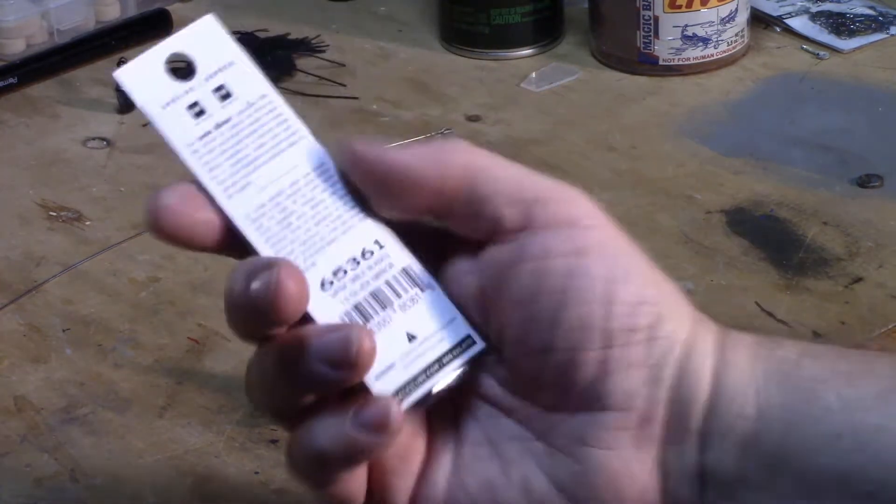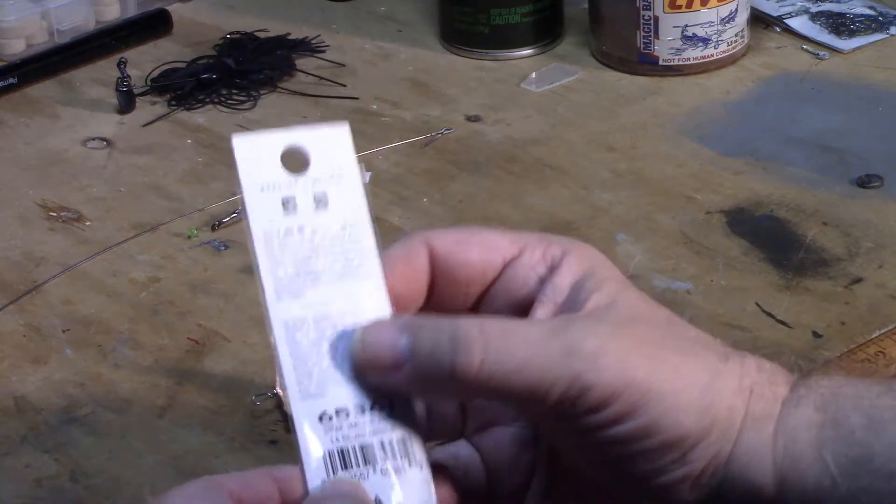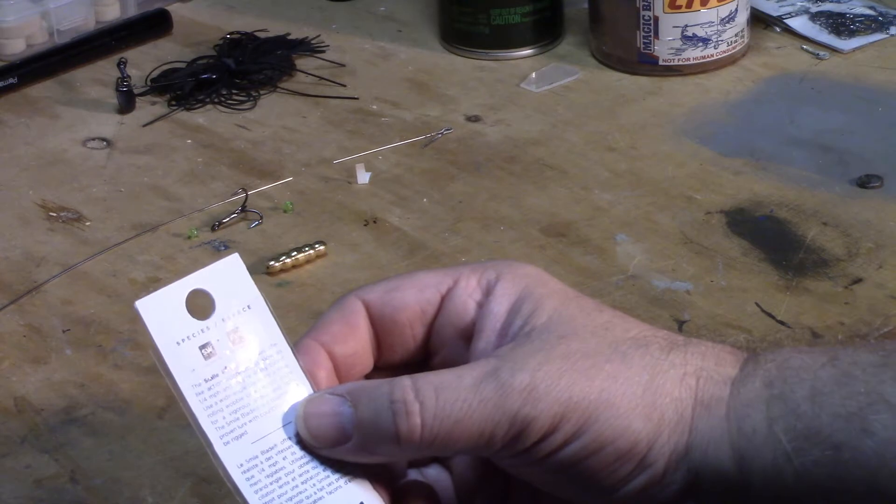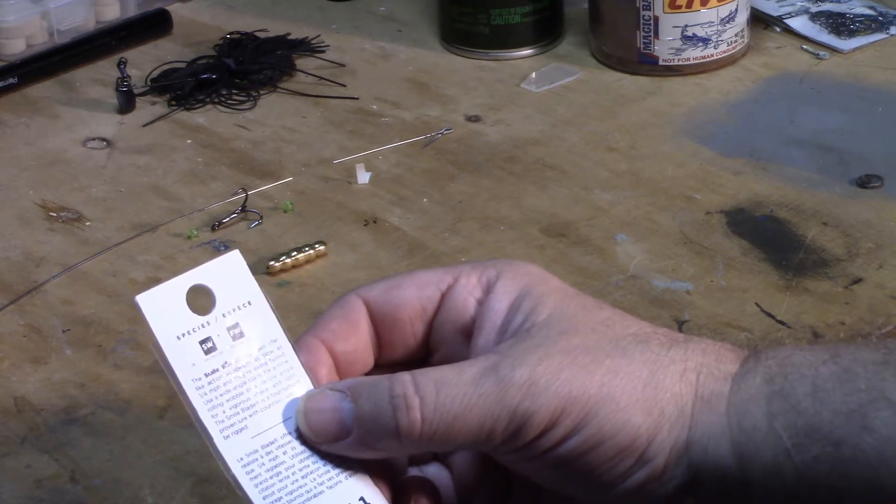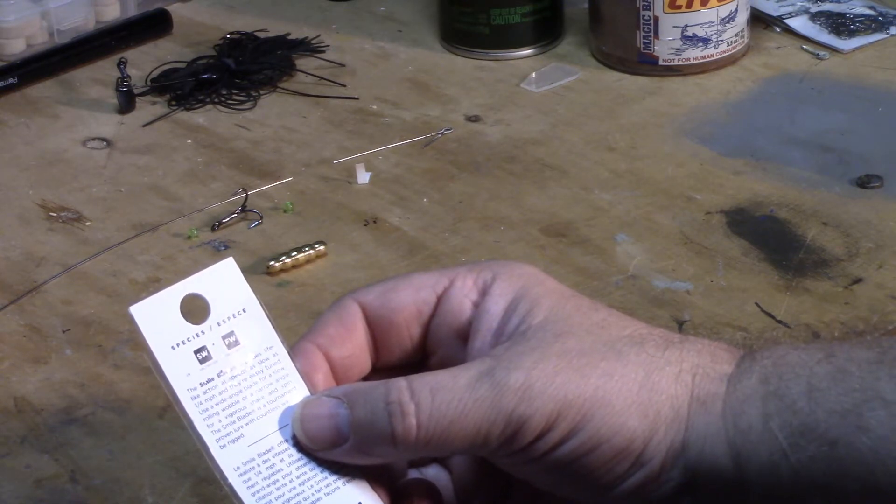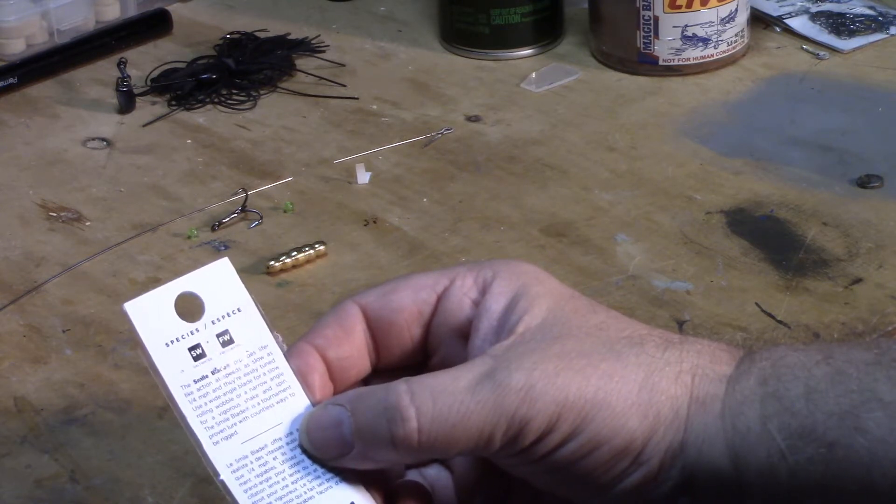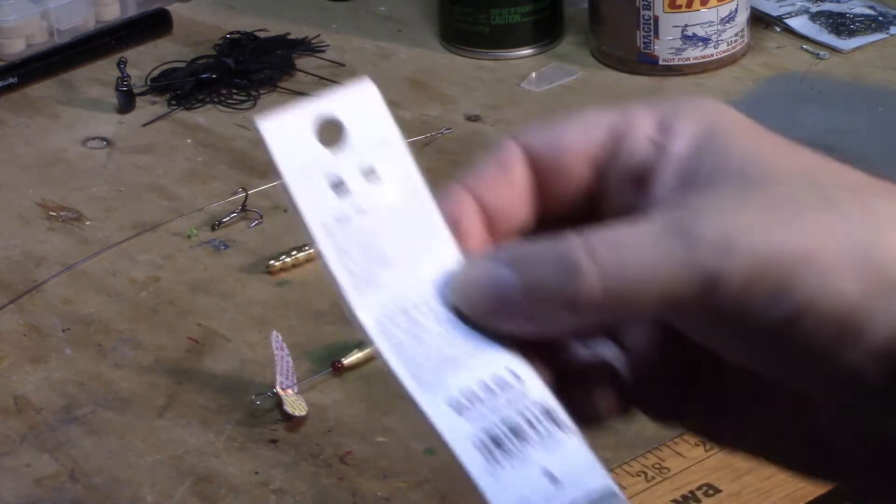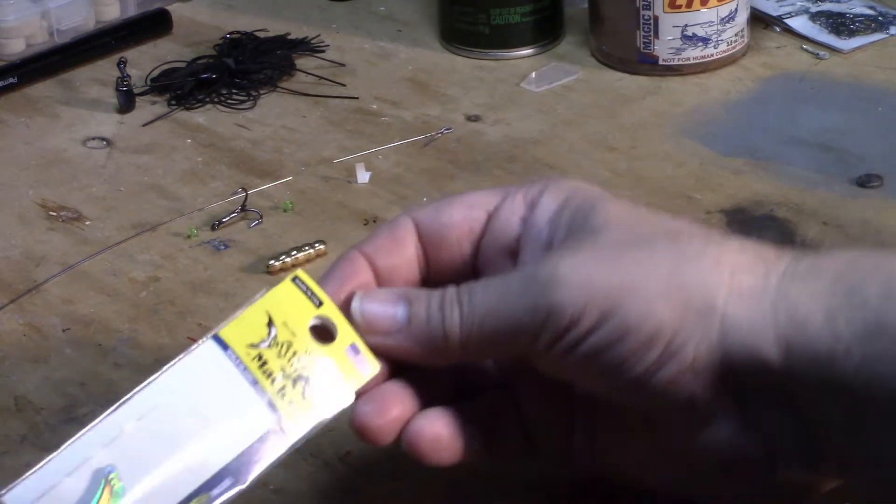Let me read this to you. This is exactly what the package says. The Smiley Blade provides lifelike action at speeds as low as a quarter mile per hour and they're easily tuned. Use a wide angle blade for a slow rolling wobble or a narrow angle for a vigorous shake and spin. The Smiley Blade is a tournament proven lure with countless ways to be rigged. This is made in the USA.